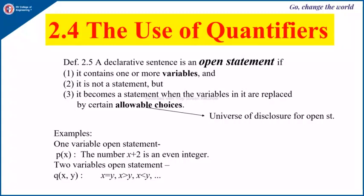Let us see the examples. The first one is an open statement with one variable: p(x) such that the number x plus 2 is an even integer. An open statement with two variables is q(x, y) such that x equals y, or x greater than y, or x less than y, or x greater than or equal to y, and so on.